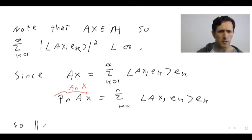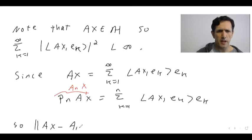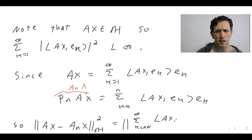Remember what it means to have convergence in the strong operator topology: for a fixed X, we need to show that AX minus ANX converges to zero. Well, this is just the tail from K equals N plus 1 to infinity of the inner product of AX with EK times EK. And by Parseval's theorem, since this sum is finite, the tail here goes to zero as N goes to infinity. So AN converges to A in the strong operator topology.